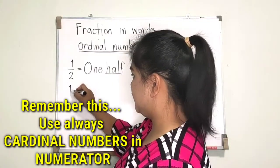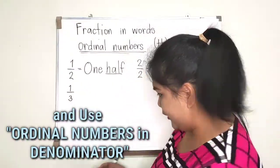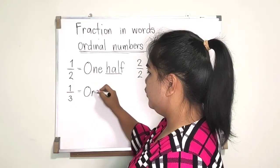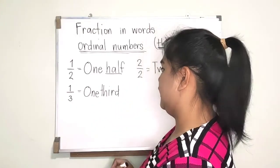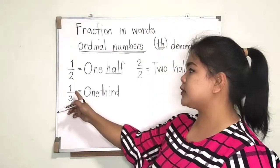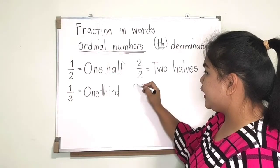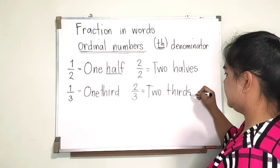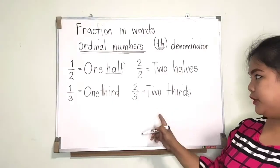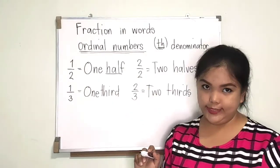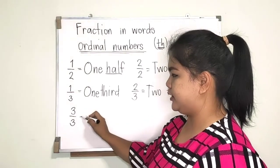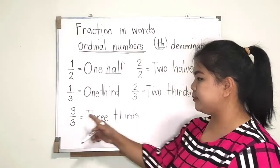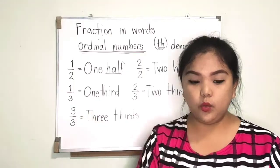For this next example, we are going to apply ordinal numbers. So if we are going to write 1/3, it will be 'one third.' Why one third? Because the numerator is equal to one, so we are not going to put S. But if we have 2/3, we are going to put S — 'two thirds.' Why? Because the numerator is more than one. We can also write 'three thirds' with S because the numerator is more than one.